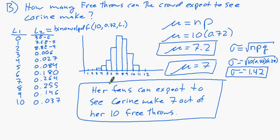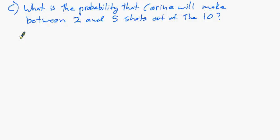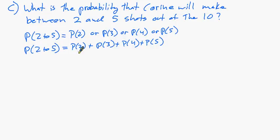Now, on to the third question for Corinne. What is the probability that Corinne will make between 2 and 5 shots out of the 10? So now we have a range of values that we want to combine. If we were to write this using probability notation, it would look like this. Probability of getting between 2 and 5 shots would be the probability of getting 2 or 3 or 4 or 5. If we write it with the AND and the OR, it gives us what we have to do. Addition rule. So we'll be adding these individual probabilities.